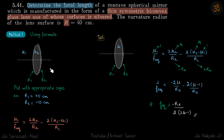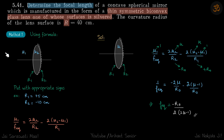Let's say the surface here has radius r1 and this is r2. Then the formula for this system is: mu1 / f_equivalent = 2·mu2 / r2 − 2(mu2 − mu1) / r1, where r1 and r2 need to be put in with appropriate signs. Because the incident ray is coming from the left, r1 will be positive and r2 will be negative.